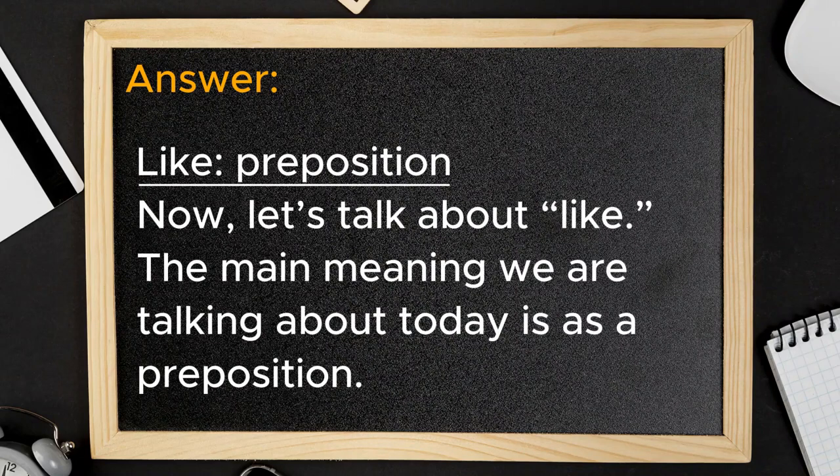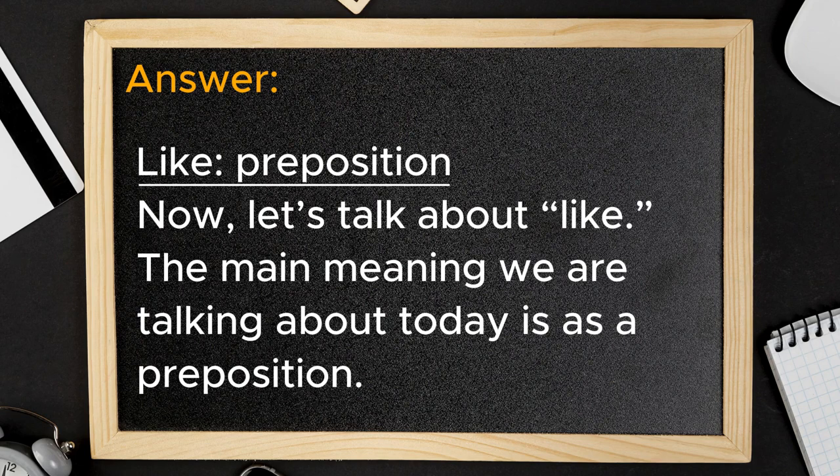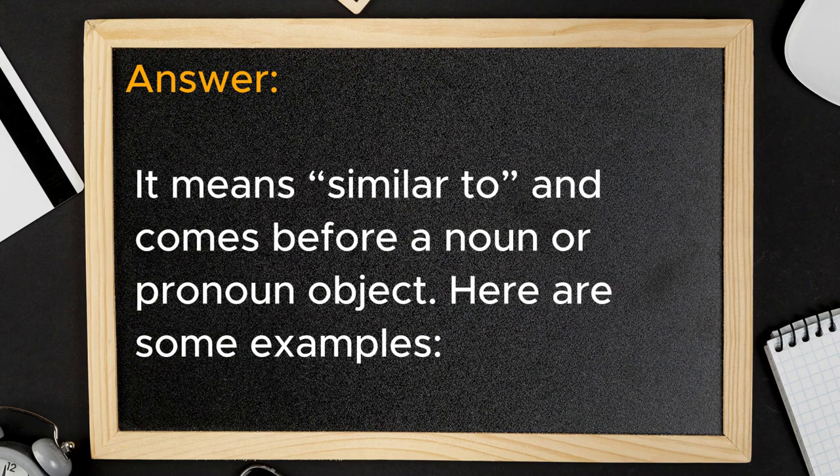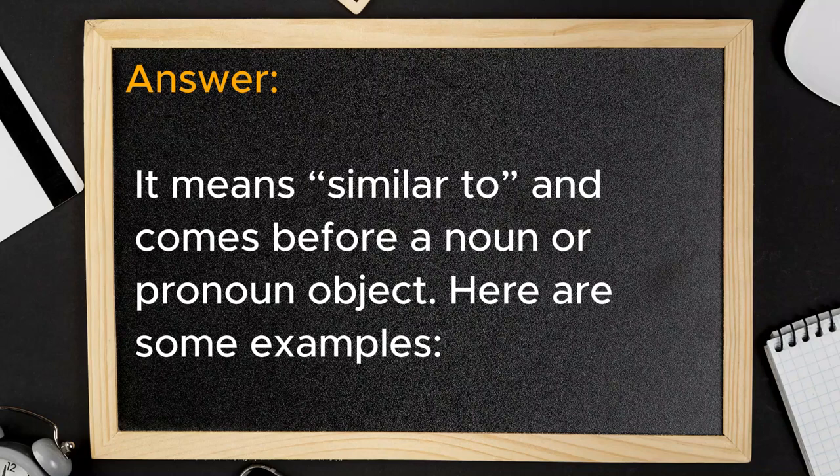Now, let's talk about like. The main meaning we are talking about today is as a preposition. It means similar to and comes before a noun or pronoun object. Here are some examples.